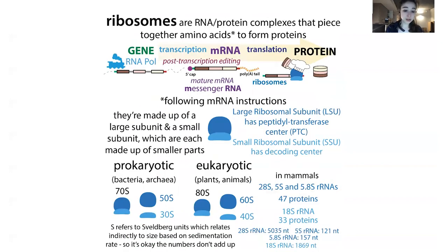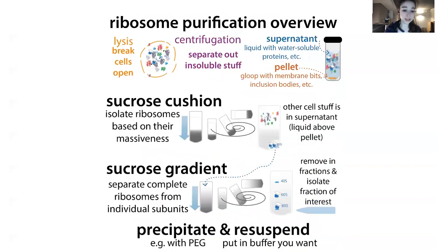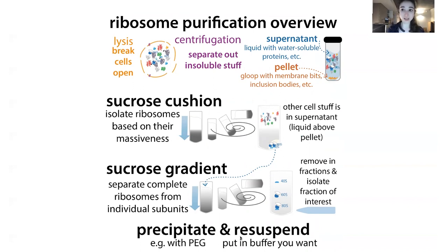Then what you want to do is precipitate that out — with polyethylene glycol, or PEG, you can get it to precipitate out and then resuspend it in whatever buffer you want. And then you have purified ribosomes to work with.